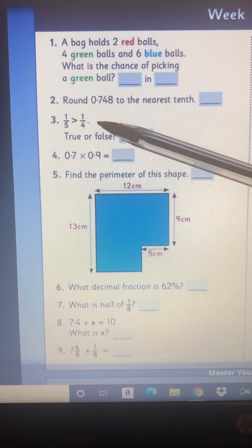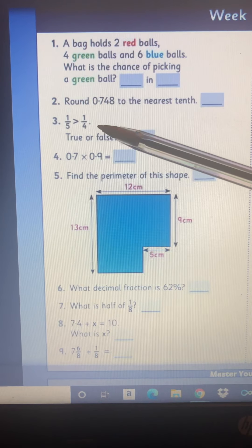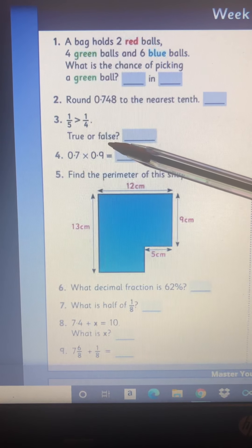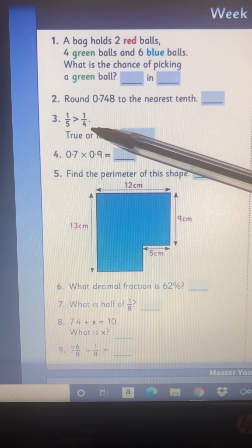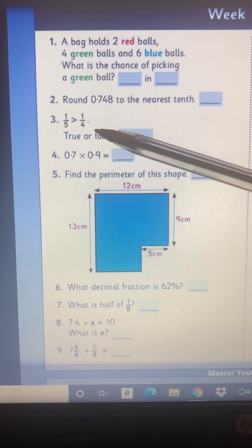Number three, again you had it yesterday, one fifth is greater than a quarter, true or false. So if you get them with the same common denominator it'll be easier to clarify which is bigger.